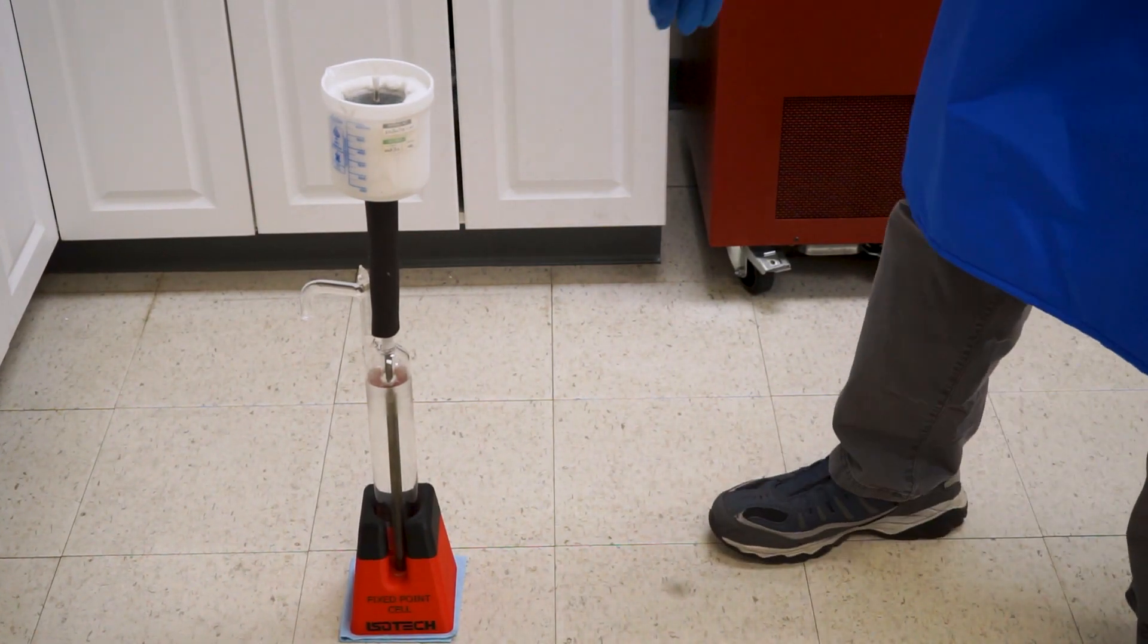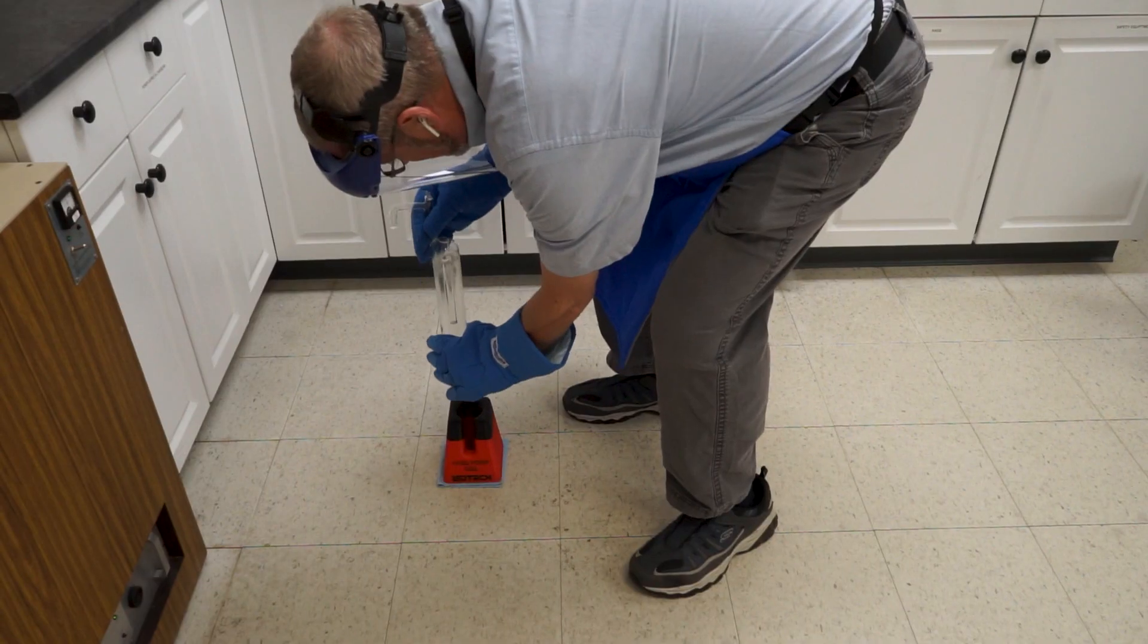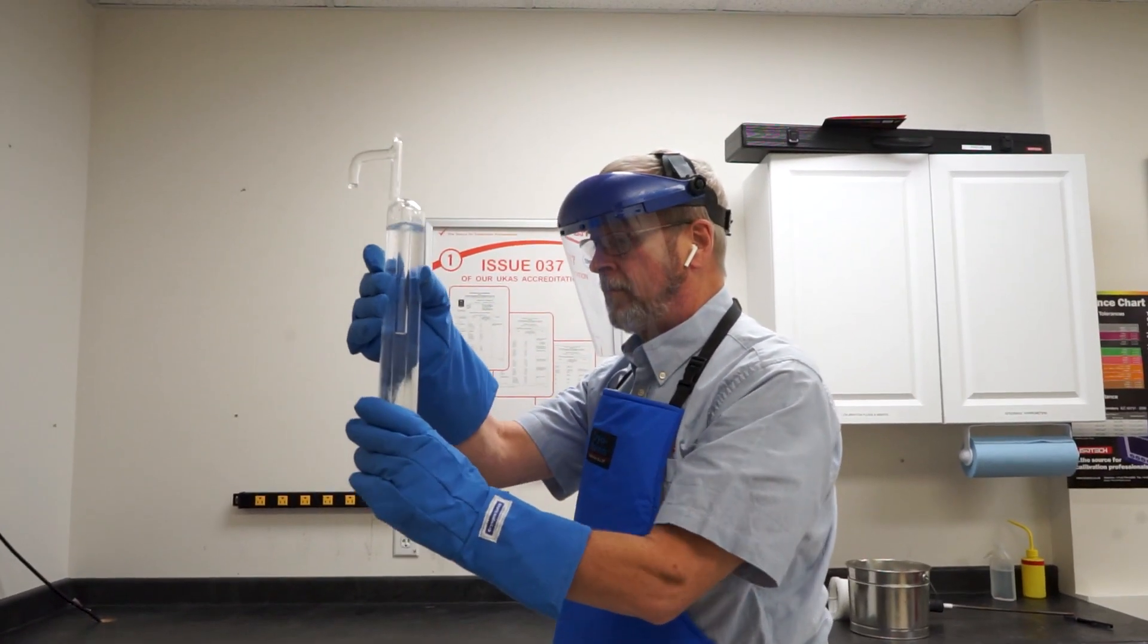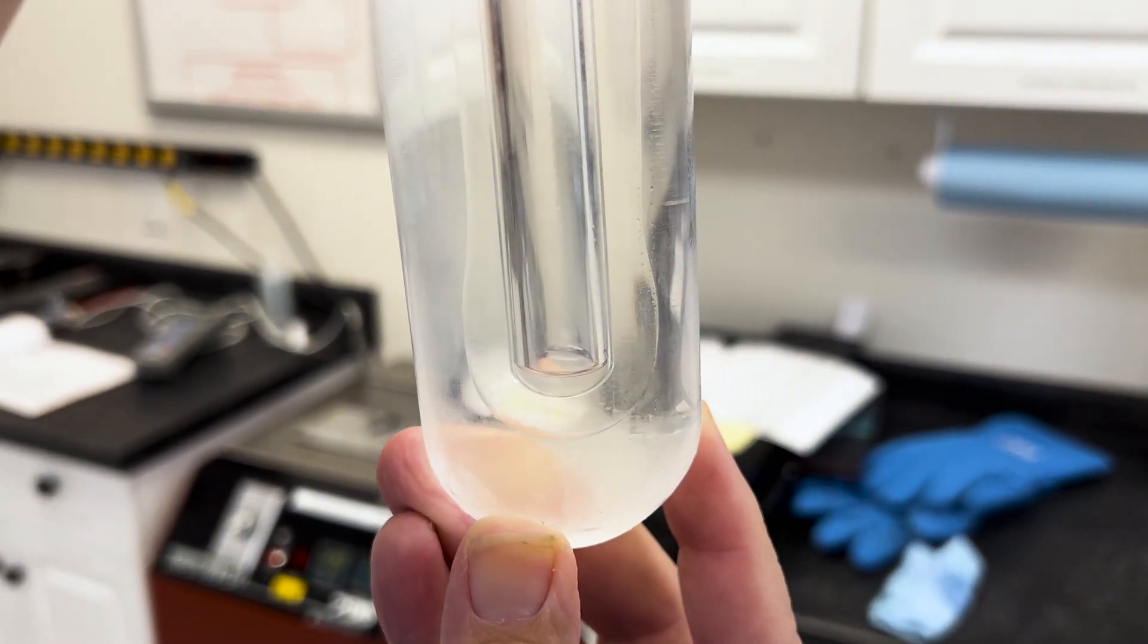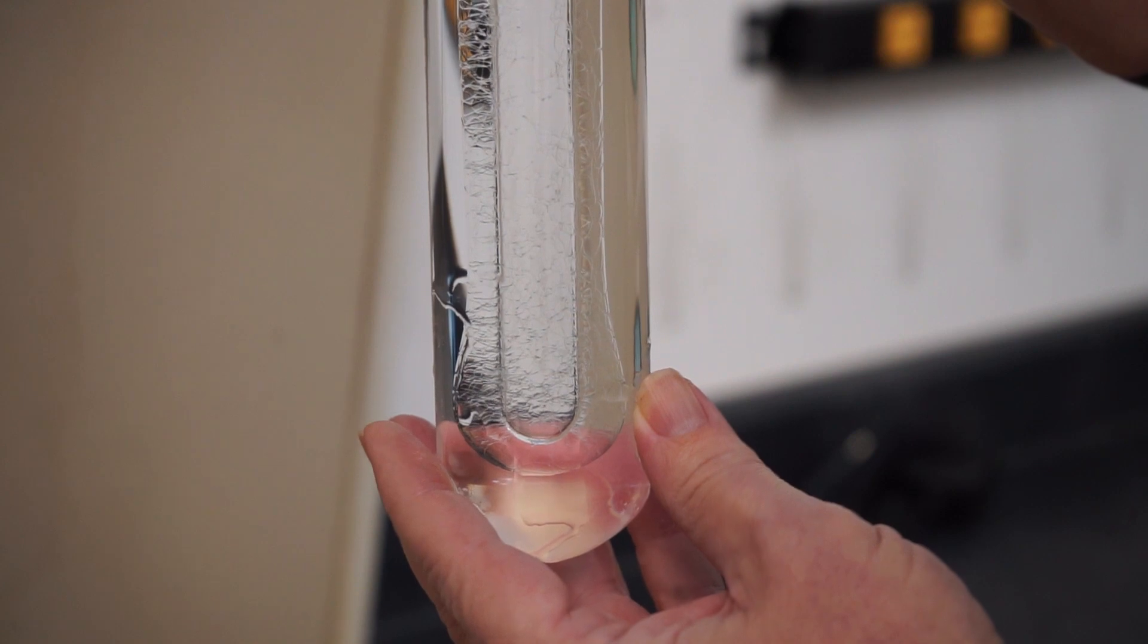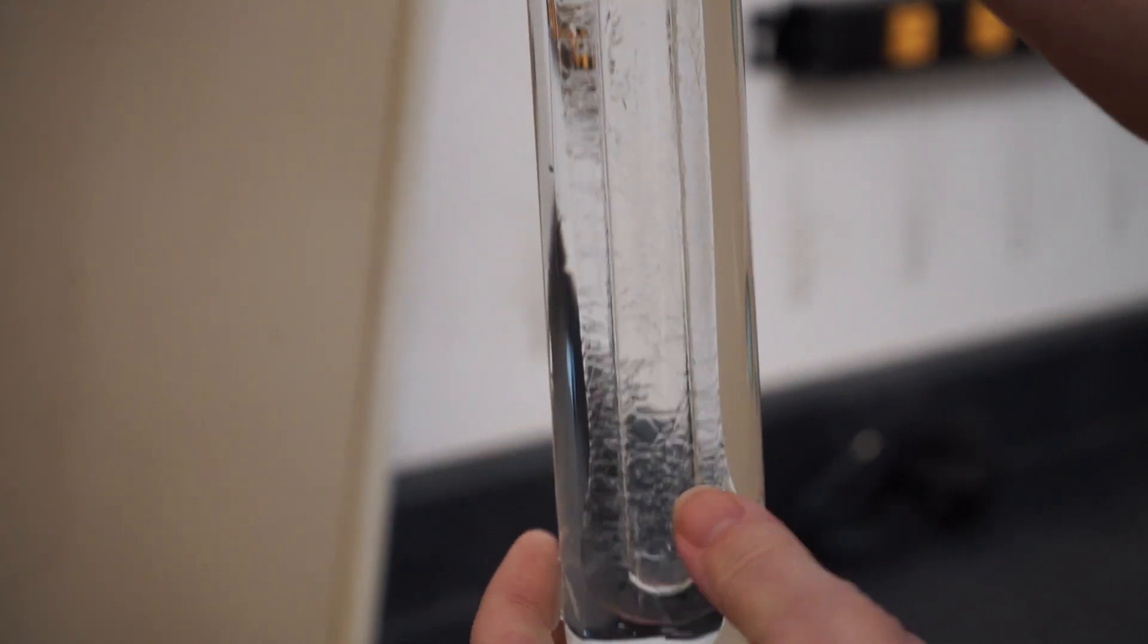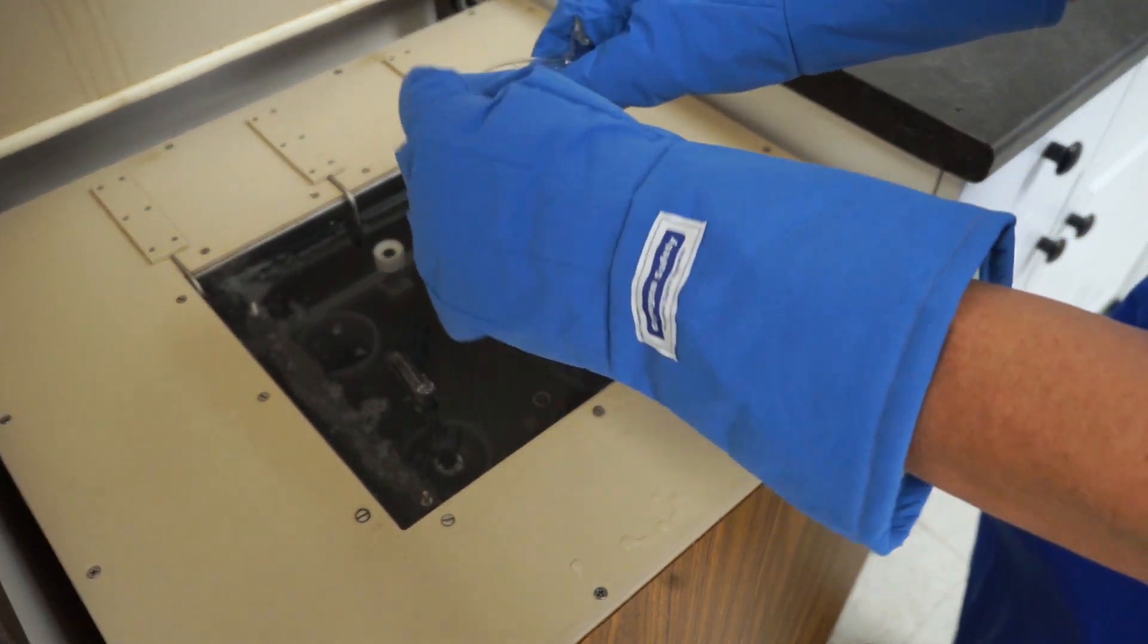Once the triple point of water has successfully been realized, we need to remove the mantle maker from the cell. Then, we can take the cell out of the stand and perform an additional visual inspection. At this point, it will be more than obvious that the ice mantle has formed, but it is important to wait until the ice is oscillating around inside the cell to take a measurement. The final step is to lower the cell into the maintenance bath, and then the process is complete.